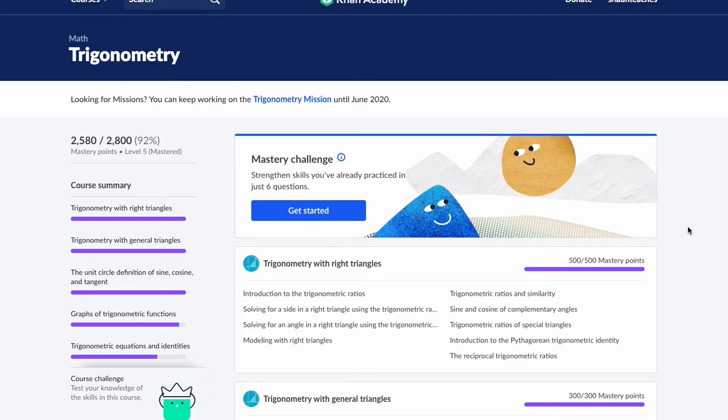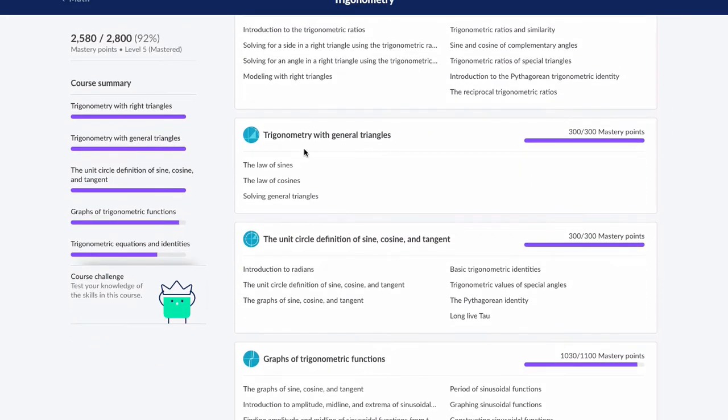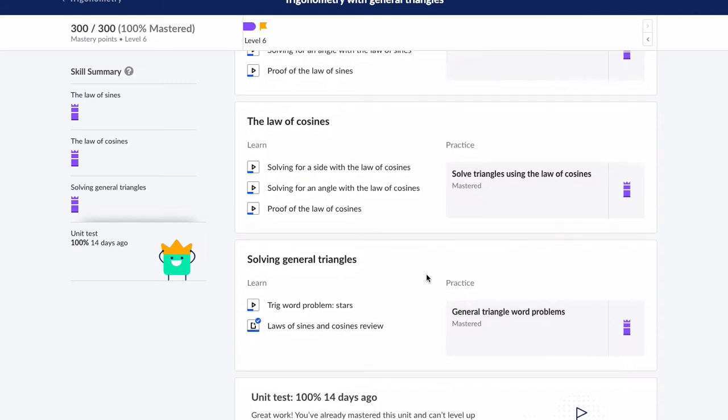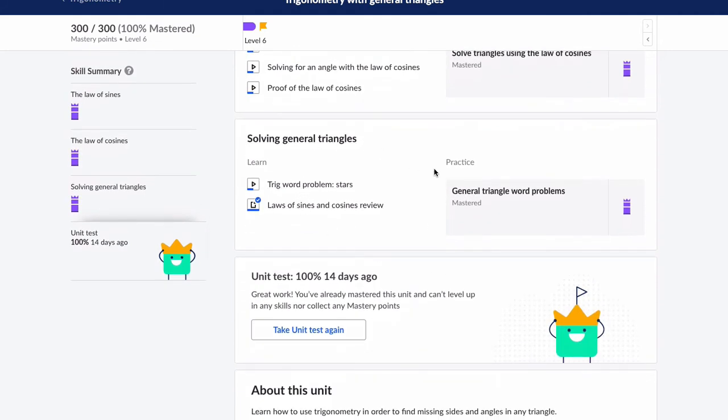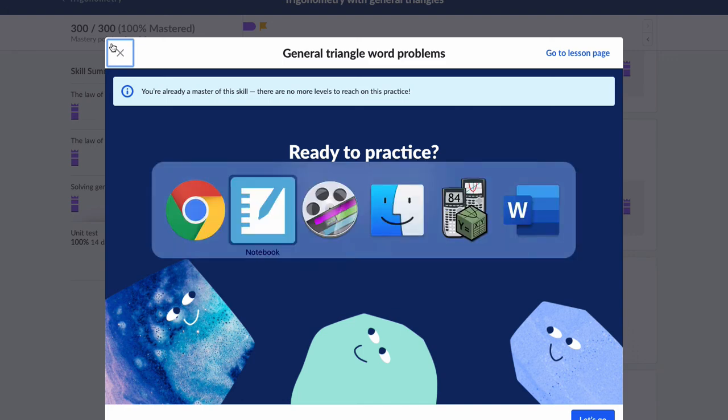Hello, welcome. In this video, we're looking at Khan Academy trigonometry, specifically under trigonometry with general triangles, past the law of sines and cosines. We have general triangle word problems. There's a whole bunch of stuff in here. Let's try some out.